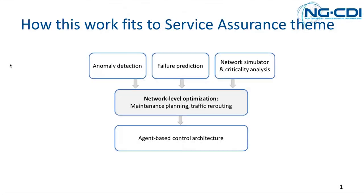This is where my work on network-wide optimization of predictive maintenance planning joins in. It tries to use the outputs of all those tools and aims to provide the best maintenance plans given failure predictions for individual equipment — not by making independent decisions per equipment, but by looking at the whole network performance. This naturally connects to the work Marco is doing on agent-based control architecture: how to design agents, what their architecture should be, how they communicate, and how to activate decisions based on those algorithms.